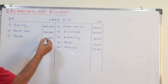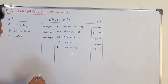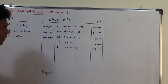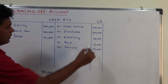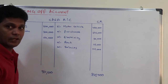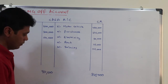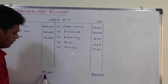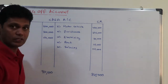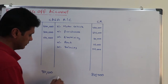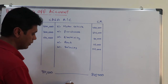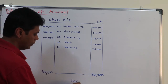On the debit side the total will be nine hundred and fifty thousand. On the credit side, when you take the total, it will be eight hundred and twenty five thousand. From the largest amount you have to deduct the smallest amount, so the balance is 950 minus 825, which equals one hundred and twenty five thousand.